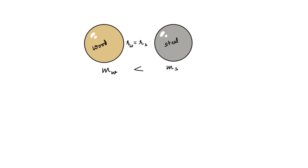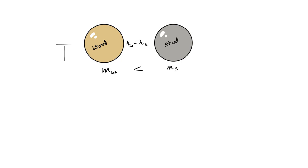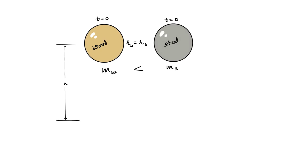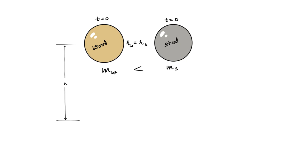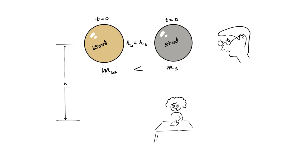What better example can the YouTubers present than two balls — one made out of wood or plastic and the other made out of iron or something heavy for that much volume. It was asked which one is going to reach the ground first if dropped from the same height at the same time. Most answered that the heavier one reaches the ground first, and that disappointed me.